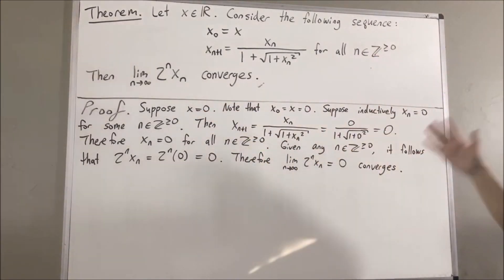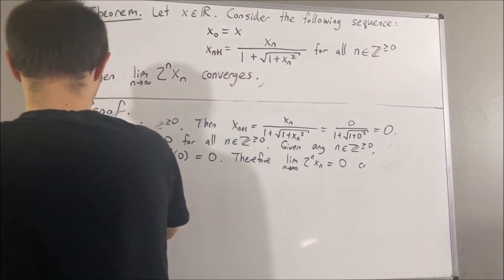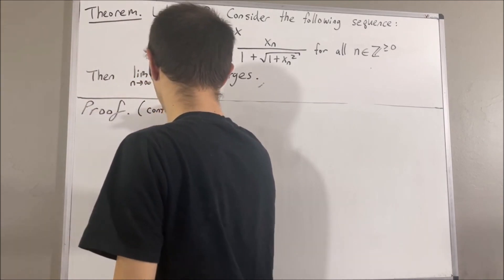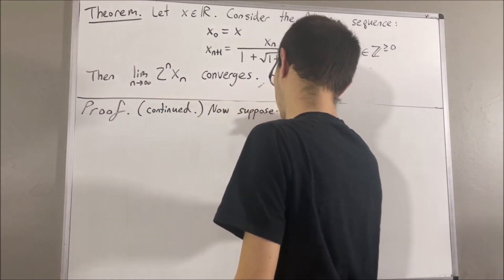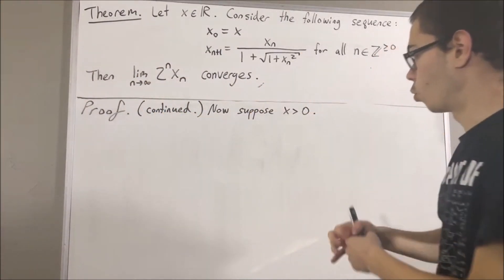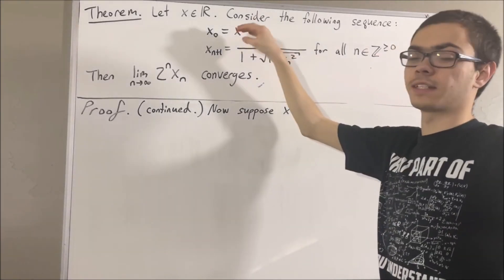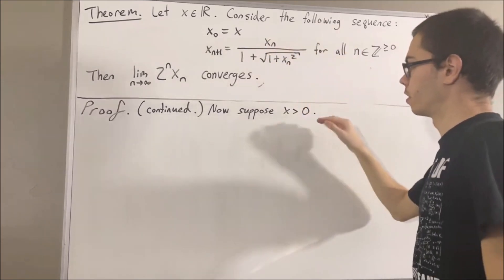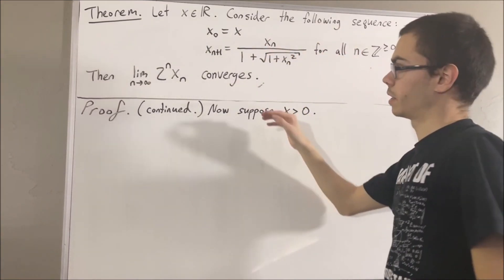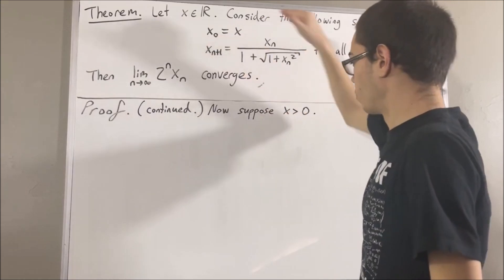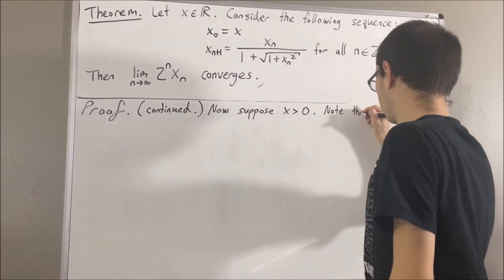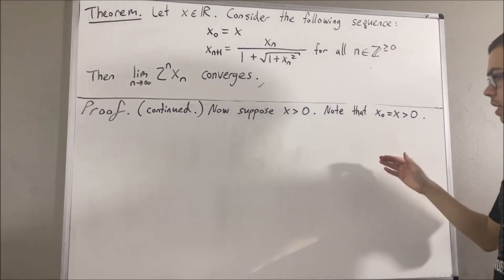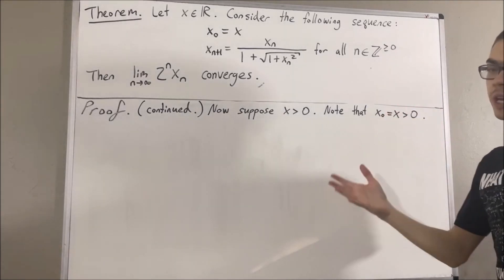Now let's move on to the case x is greater than 0. In this case, we're first going to show that all of the xn's are greater than 0. To prove that, let's establish that by induction. The base case is already done because x0 is equal to x, which is greater than 0. For the induction step, we assume that xn is greater than 0 for some n.